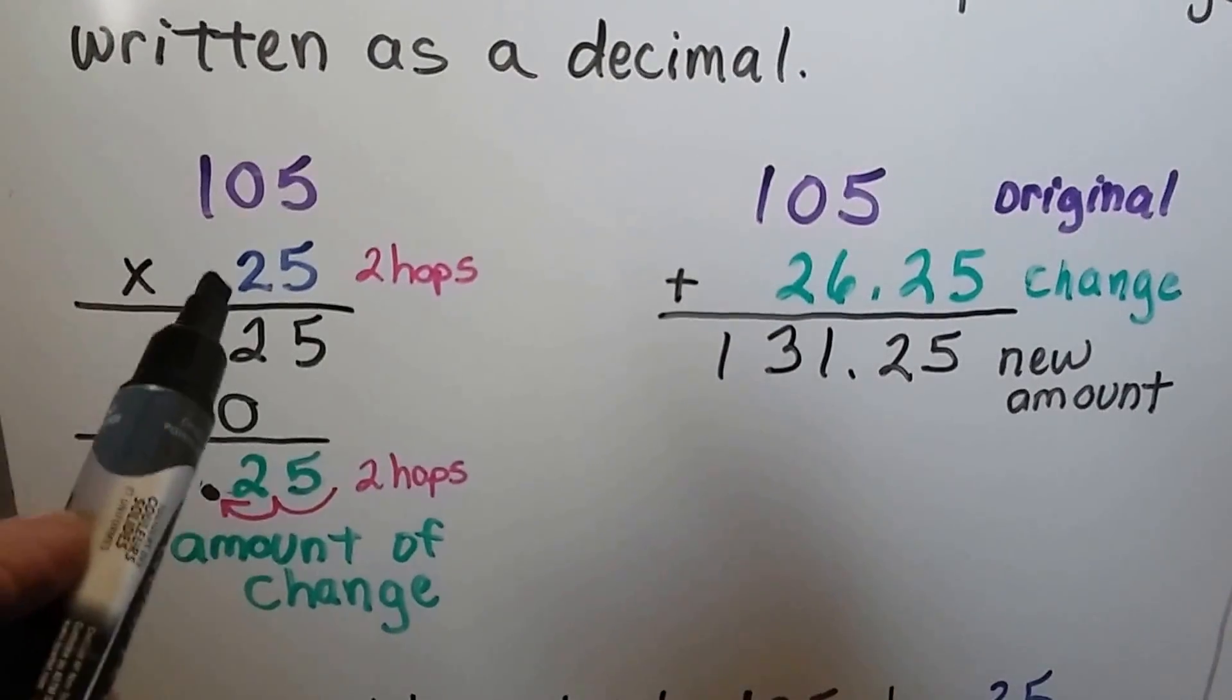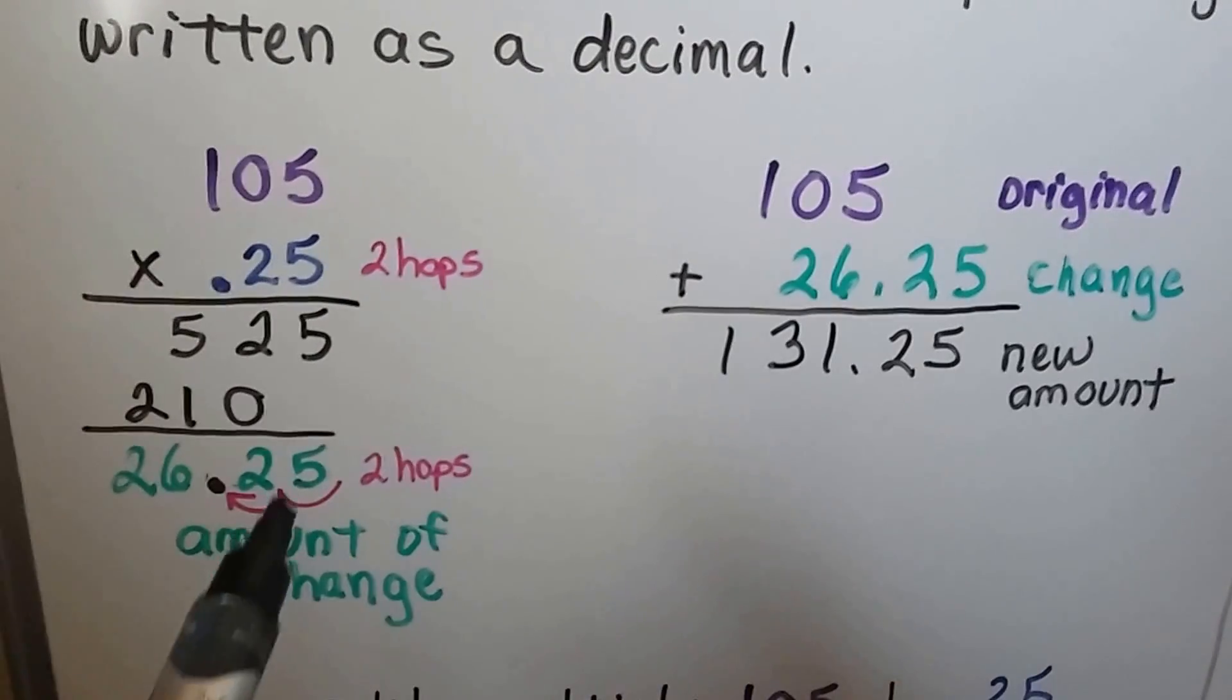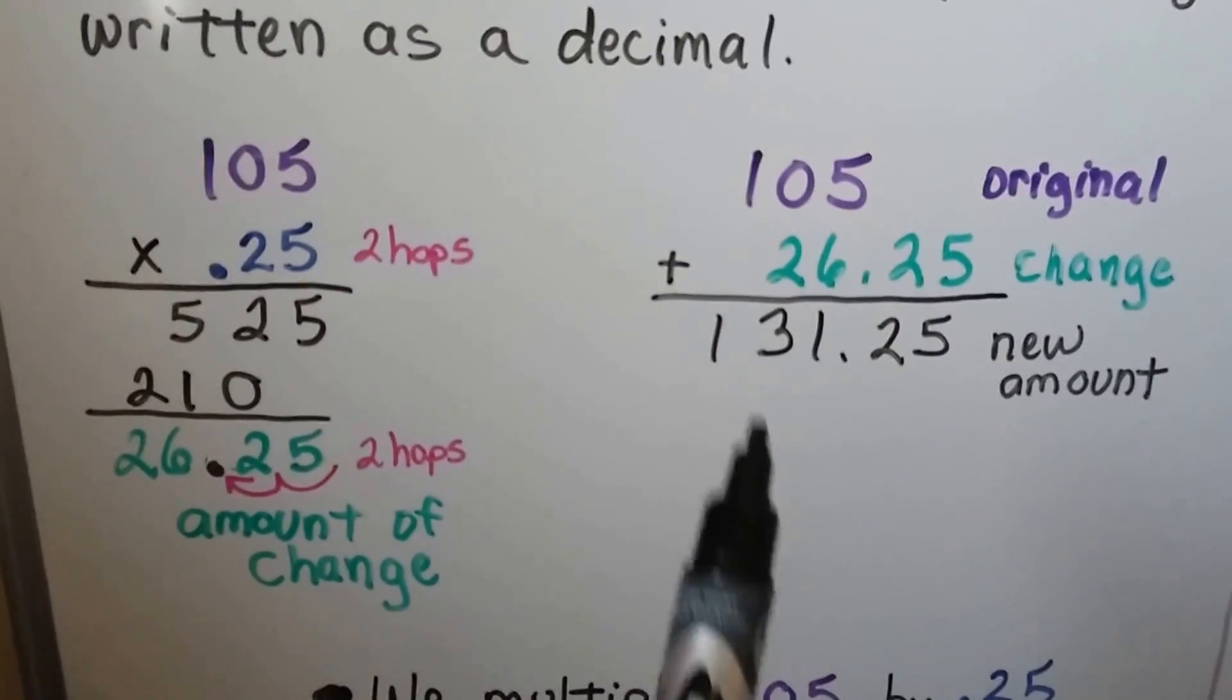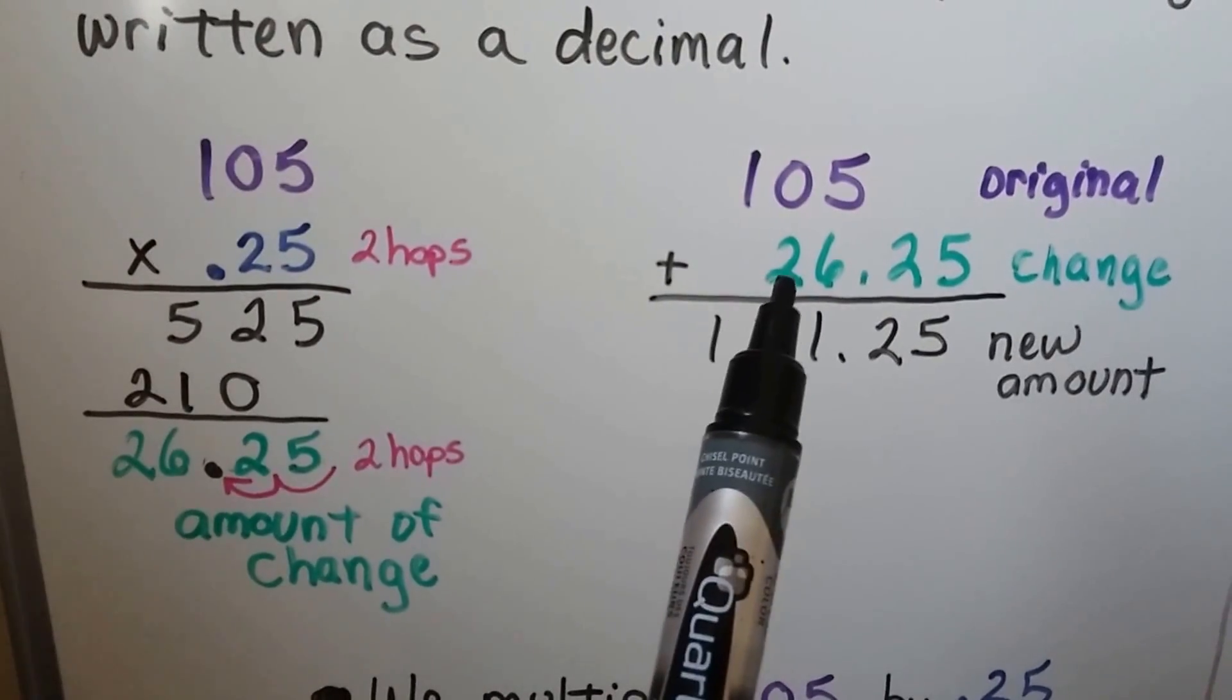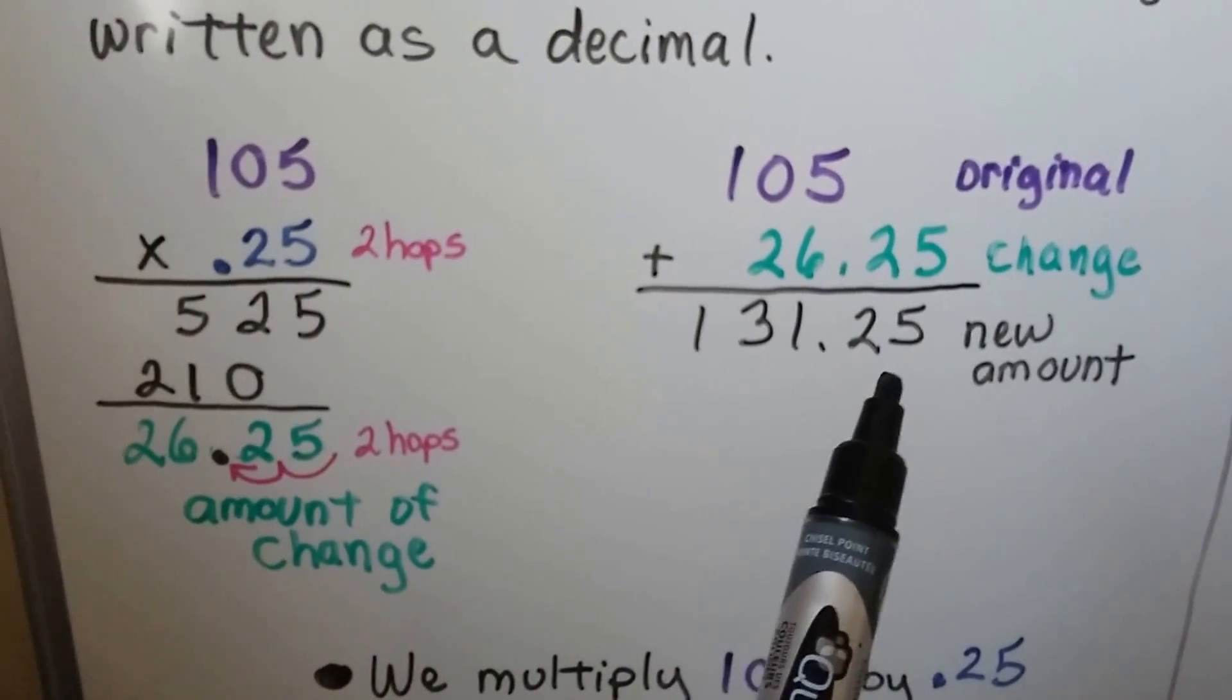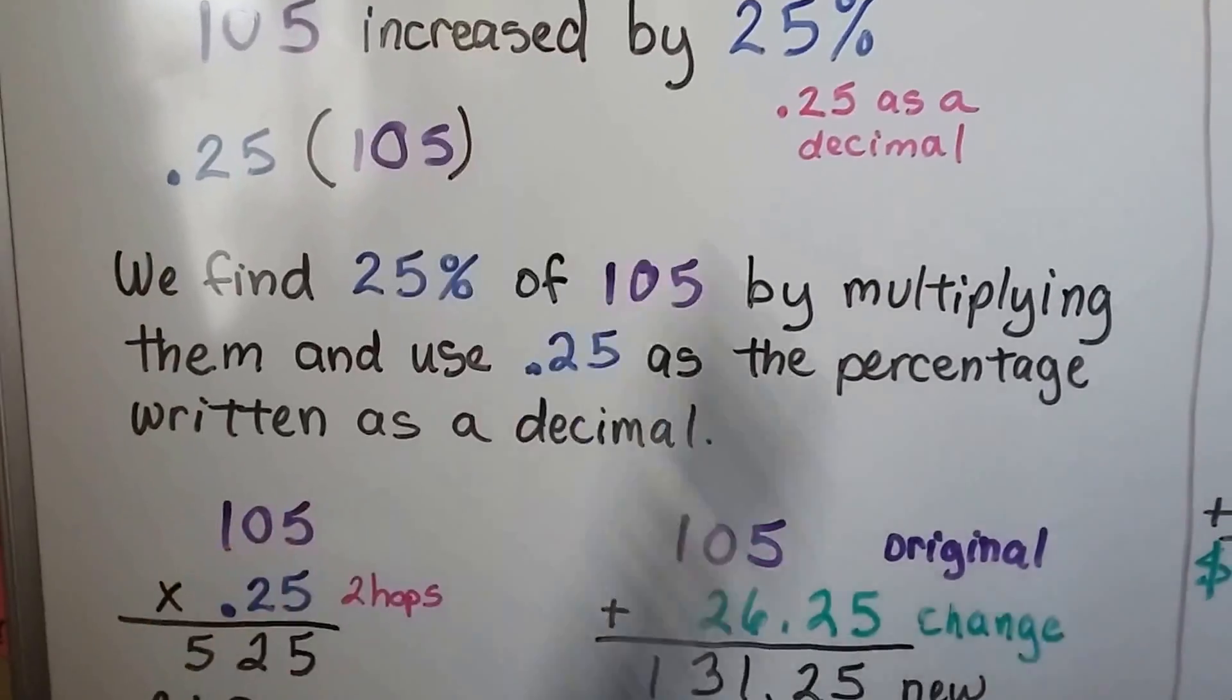105 times .25 is 26.25. Remember, if there's two hops in the equation, there's going to be two decimal hops in the product. You can do this on your calculator quickly too. 105 plus the 26.25 gives us 131.25. We add it because it's an increase.